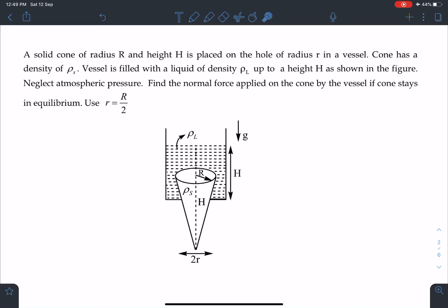So I'll read the statement of this problem. A solid cone of radius R and height H is placed on the hole of radius r in a vessel. Cone has a density of rho s. Vessel is filled with the liquid of density rho l up to a height of H as shown in the figure. Neglect atmospheric pressure. Find the normal force applied on the cone by the vessel if the cone stays in equilibrium, and you can use this relation: small r is equal to capital R by 2.